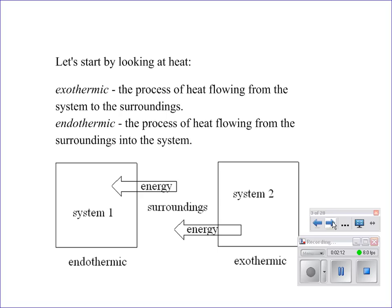We're going to start with our Chem 1 review. Exothermic is the process of heat flowing from the system to the surroundings. Endothermic is heat flowing from the surroundings into the system. Different ways you can remember it. You all know this, right? Pretty simple.